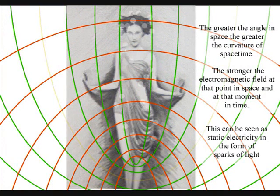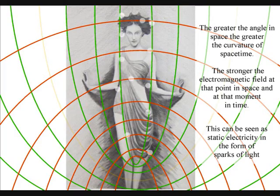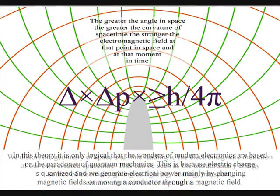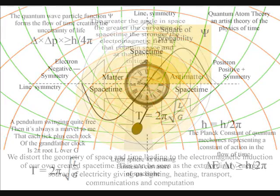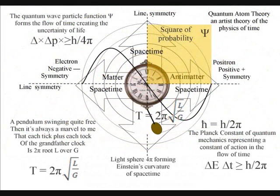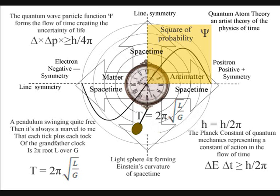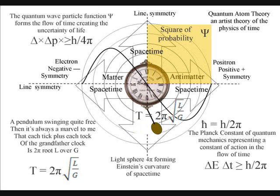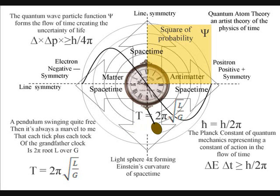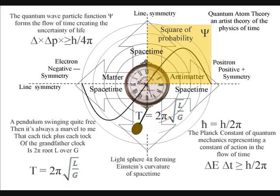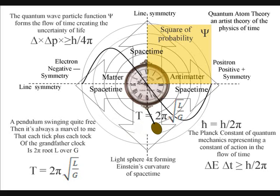Therefore we have new photon energy coming into existence, relative to the position of the atoms, forming what we see and feel as the flow of time. The greater the energy in space, the greater the curvature of space-time, and the stronger the electromagnetic field is at that point in space and at that moment in time. In this theory the universe is in a process of continuous creation, and therefore electromagnetic waves do not need a propagation medium, because each new photon is a new moment of creation, a new moment in time, that changes the curvature of space-time as the future unfolds.